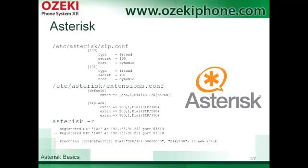First, open your sip.conf file that you can find in the /etc/asterisk directory. In this file you need to set up the extensions. You need to give an extension number, a type, a host, and a password. The friend type means that you can make and receive calls as well. The secret is the password of the account, and dynamic host means the IP phones don't have a fixed IP address — they are registered by a secret and a username.